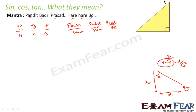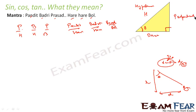In this right triangle, we have a 90-degree angle. The side opposite to the 90-degree angle is H — we call it hypotenuse. We can take any angle theta. If we take this angle theta, the side which is adjacent to the theta angle is the base, and the side which is opposite to the theta angle is the perpendicular.